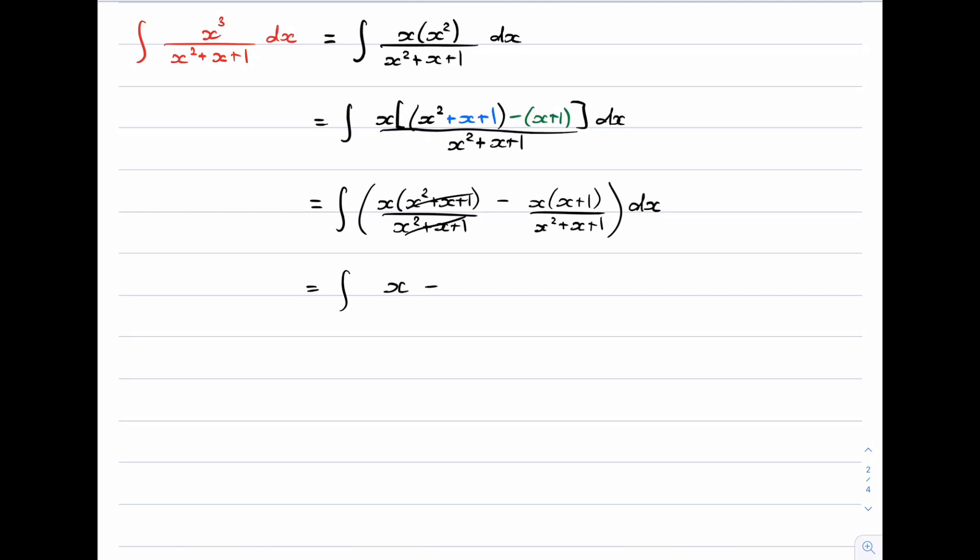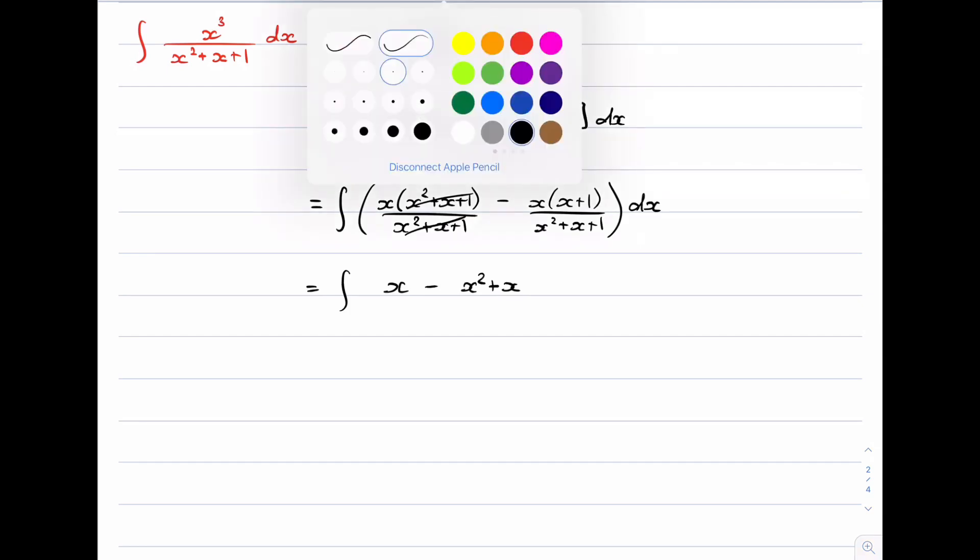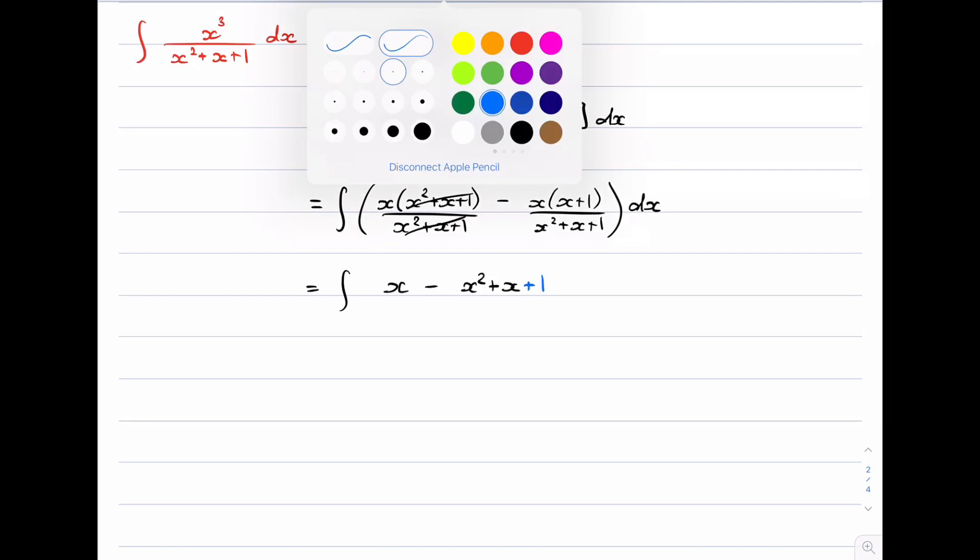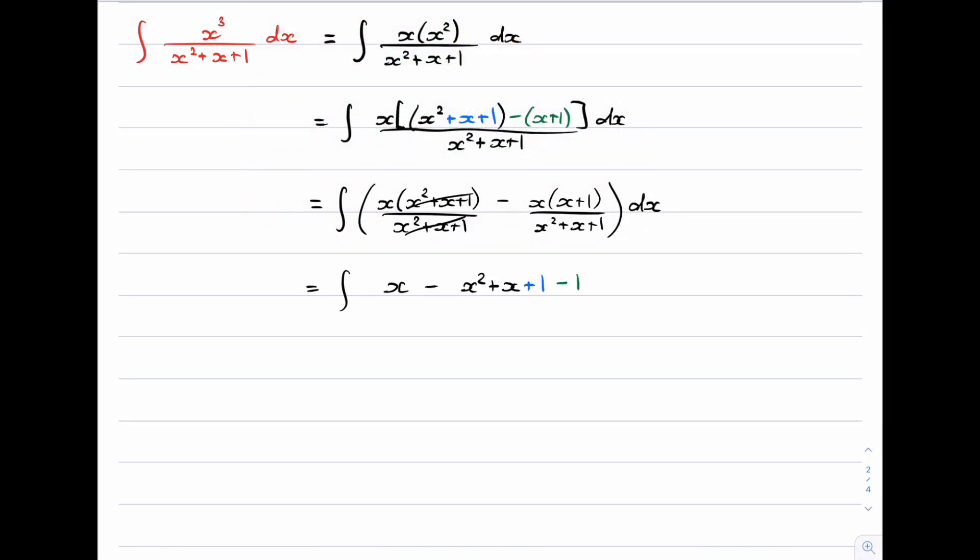And then we're going to actually do the exact same process for the second fraction. So if I distribute that x through I get x squared plus x. But of course I want to force the 1 to appear. So I'm going to add a 1 and I'm going to subtract a 1 to compensate. So I haven't changed anything overall. But I'm going to put my brackets again over x squared plus x plus 1.